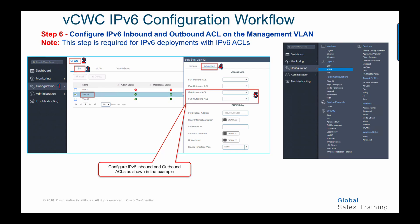In step number six, we configure IPv6 inbound and outbound ACLs on the management VLAN. This step is required for pure IPv6 deployments. Go to VLAN from the global menu, choose configuration, then VLAN, then SVI, choose your management VLAN, go to the advanced tab, and configure the IPv6 inbound ACL and IPv6 outbound ACL as shown.